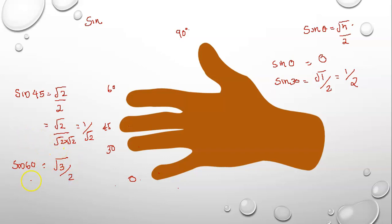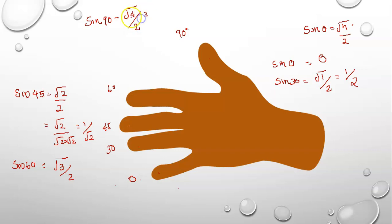Sin 60. Sin 90 — n is equal to 4. Value is root 4 by 2, that is equal to 2 by 2 which equals 1. So, sin 90 is 1. If we put in n, we can write below the sin.